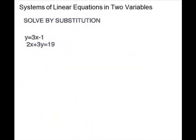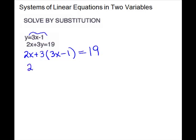For our next problem that we're going to solve by substitution, the y is isolated in the first equation. So we're going to plug 3x minus 1 into the y for the second equation. We'll keep our 2x plus 3, use parentheses, and substitute 3x minus 1 for that y, equals 19. Now we have a linear equation with one variable. Simplify first: keep your 2x plus, and this gives us 9x minus 3, equals 19.